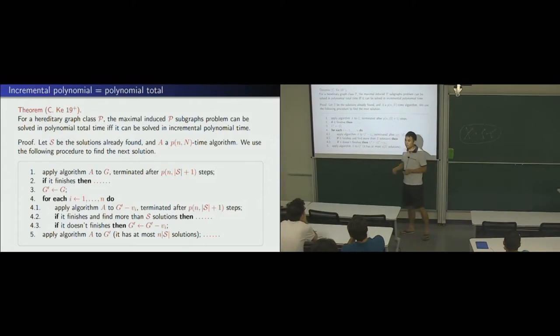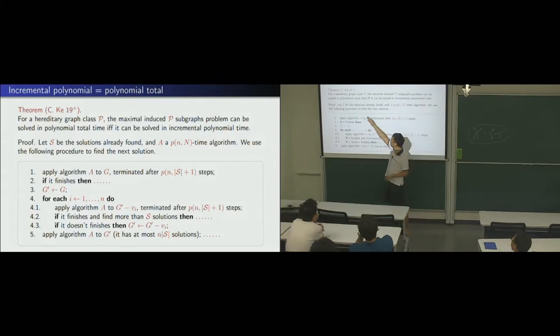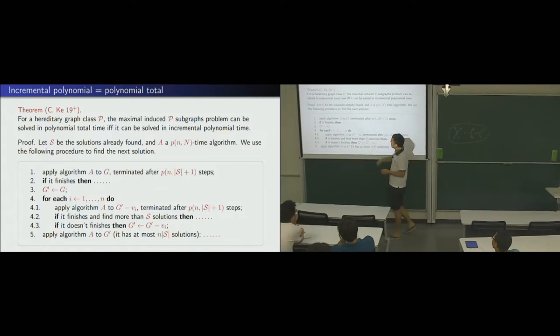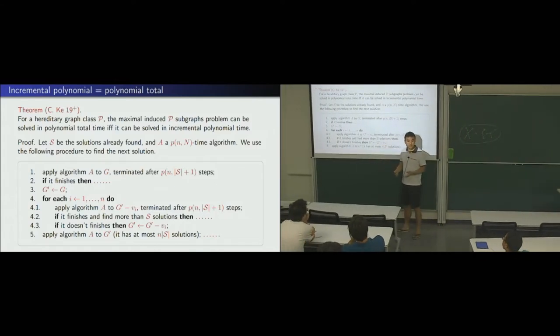Suppose, now, one way is trivial, right? Polytotal contains incremental polynomial. So, now, we wanted to show, if you can do in polytotal, then you can do incremental polynomial. Right? That's what we wanted to show. Now, suppose the problem can be done in polytotal. Suppose you have such an algorithm that can solve the problem in polytotal. That's polytotal. Okay?